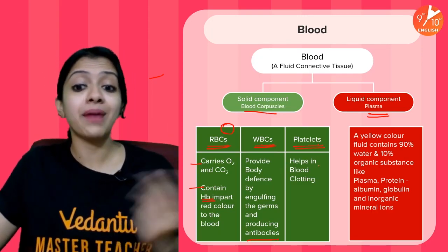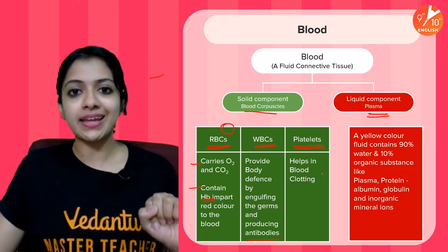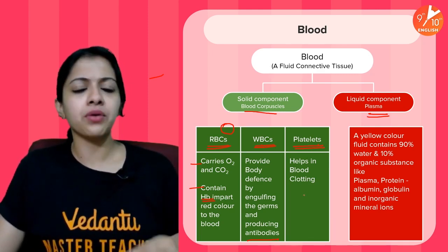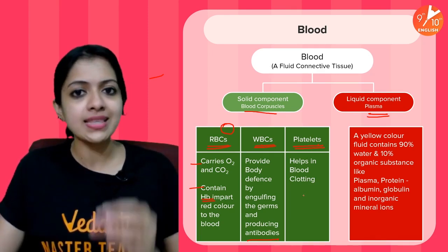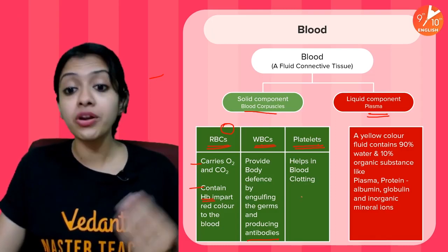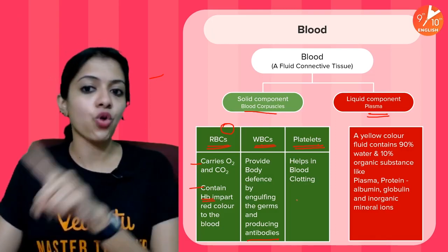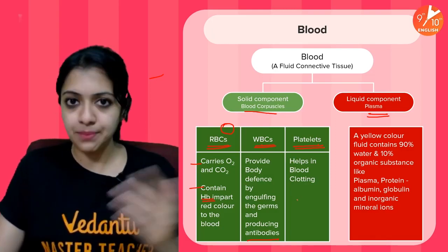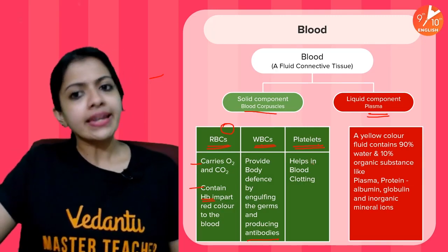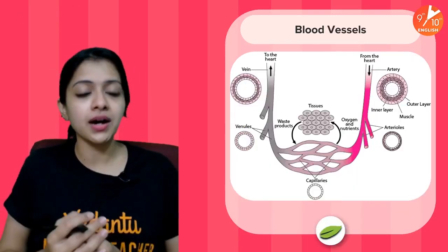Coming to blood platelets, the main function of platelets is to help in blood clotting. When you fall down, within a few minutes the blood clots — that's because of the action of your platelets. So together, plasma and blood corpuscles make up the blood.